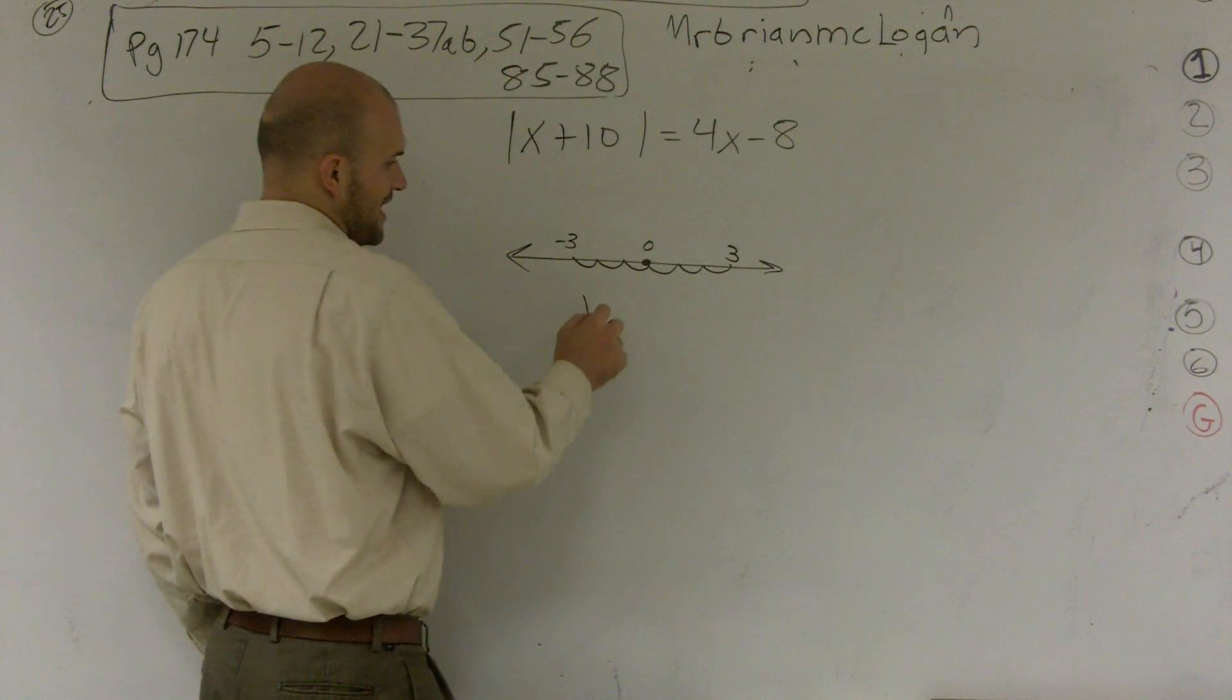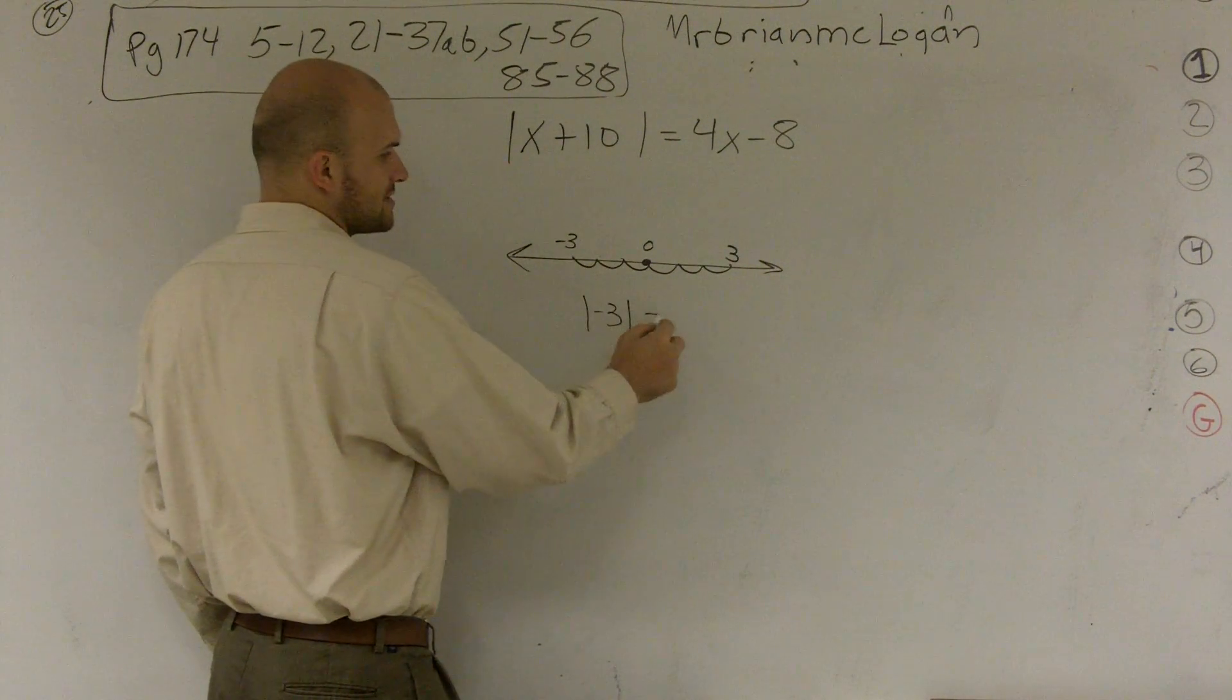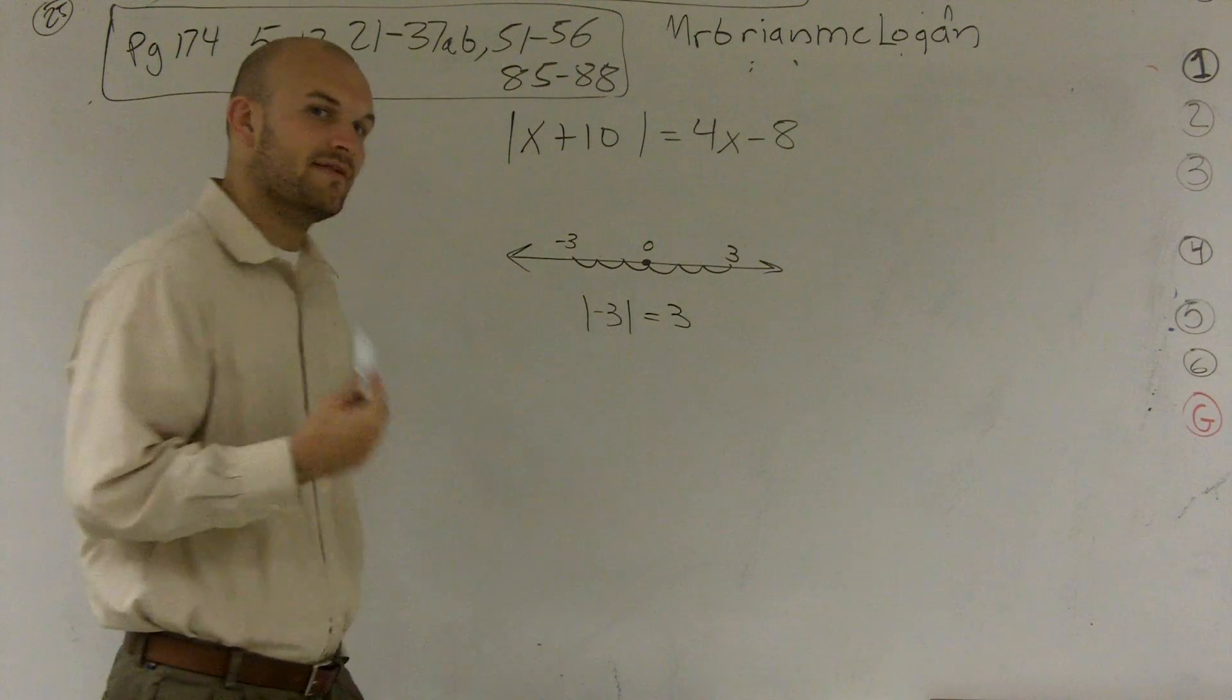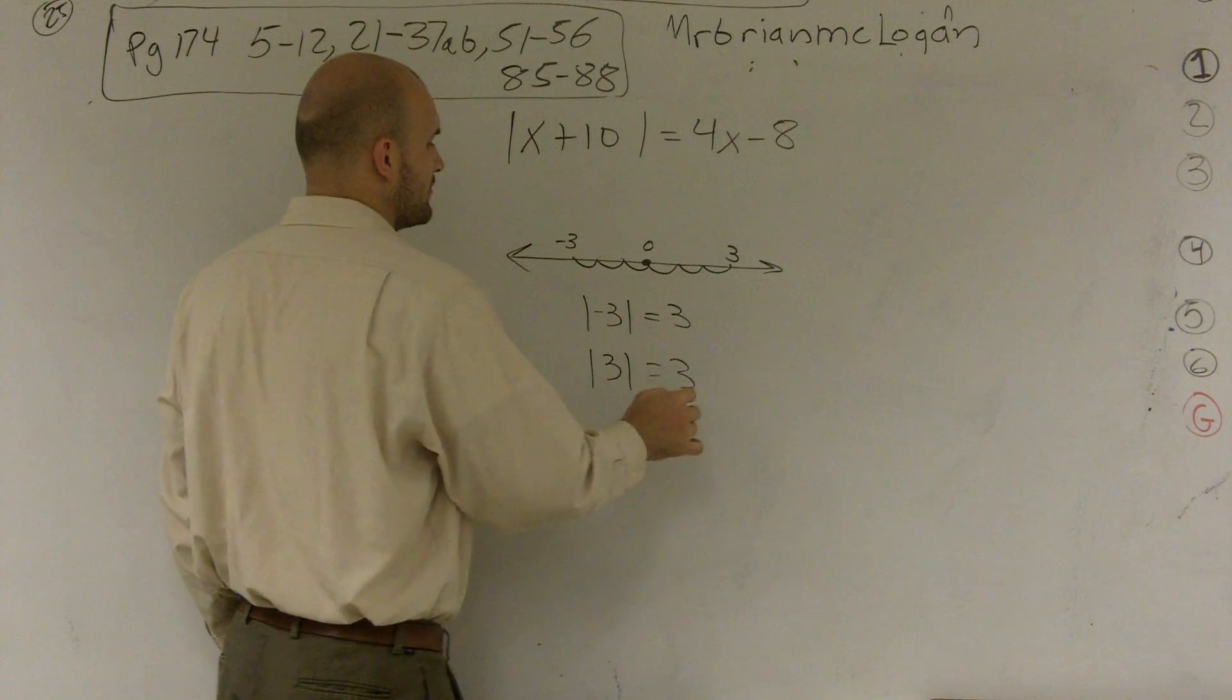Well, if I was going to say what's the absolute value of negative 3, I still move over 3 units, so that's equal to 3. And then the absolute value of 3 is still, again, going to equal 3.